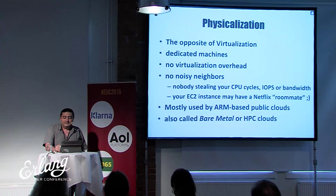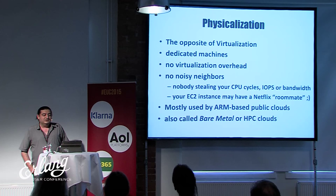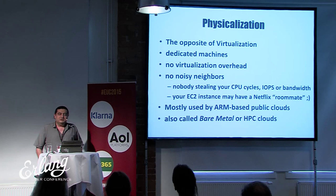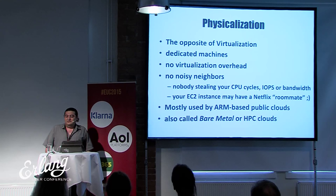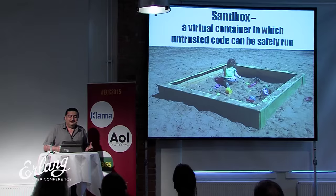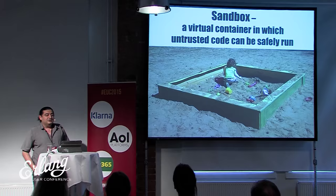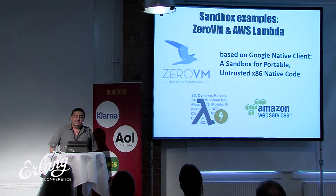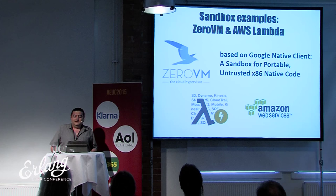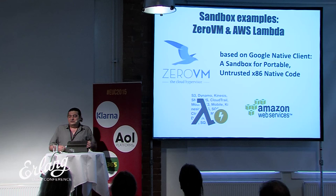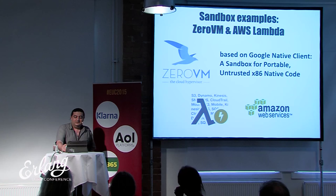Physicalization basically means the opposite of virtualization — we run code on dedicated machines. There's no virtualization overhead whatsoever, no noisy neighbors stealing your CPU cycles or IOPS, and unlike EC2, no Netflix roommate who steals your money. Sandboxing is basically a virtual container in which untrusted code can be safely run. Examples include Zero VM and Amazon Lambda, which allows you to run functions in the cloud without managing servers, with billing in 100-millisecond increments.